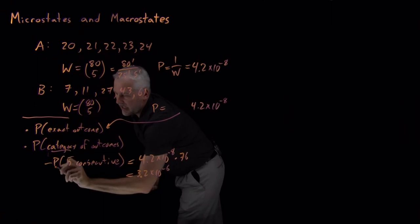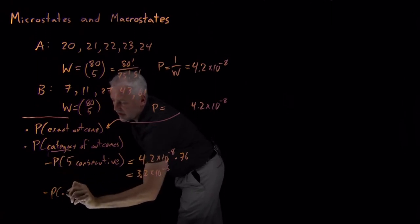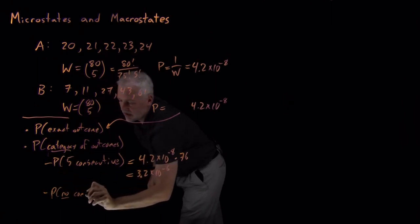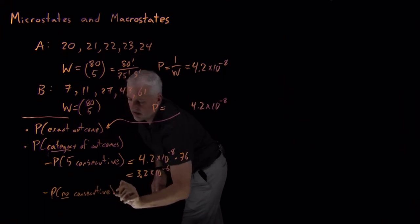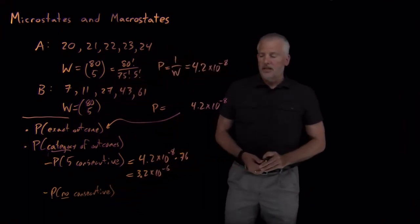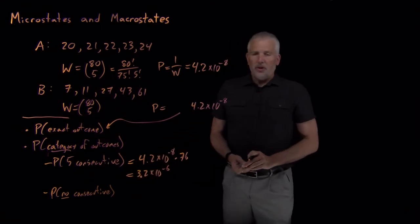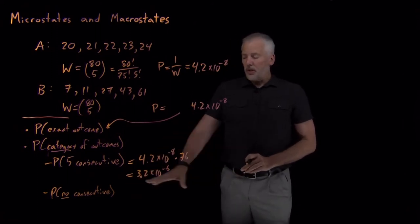As a different category of outcome, we could say what's the probability that there's no consecutive numbers in the lottery draw. So that's a somewhat more challenging probability calculation to work out. We won't do it here.